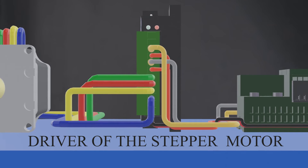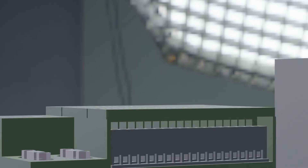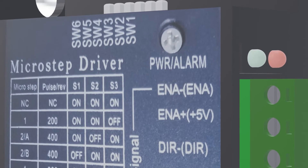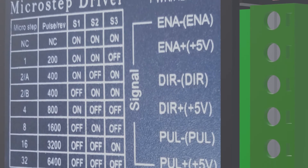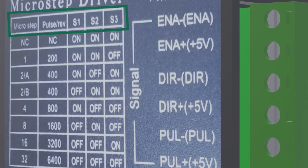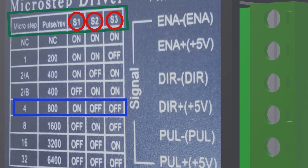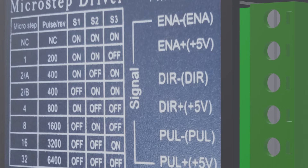The next thing is the driver of the stepper motor, of which I will show you its configuration and driver connections. Starting with the configuration table: how many pulses do we want our stepper motor to turn? We have switches one, two, and three. In this case we are going to use the configuration of 800 pulses per turn, of which we will activate only switch one.